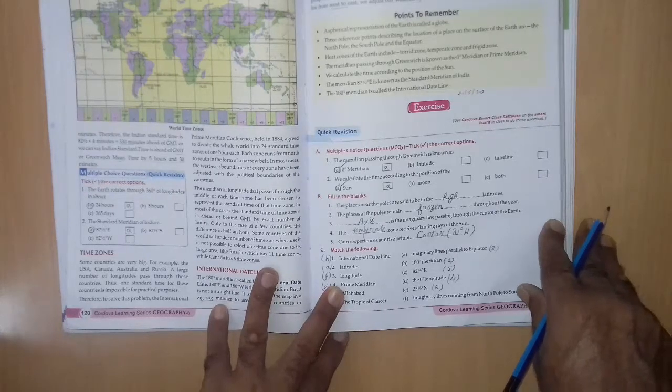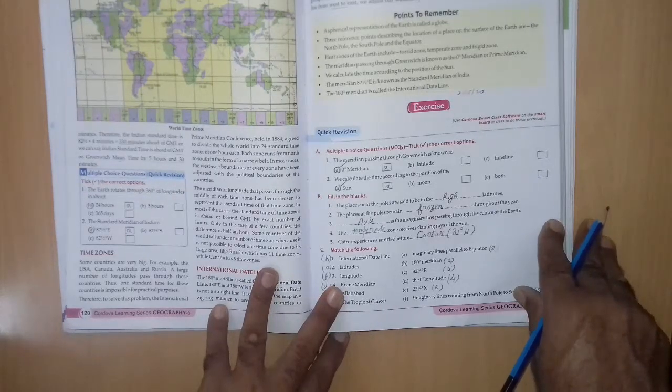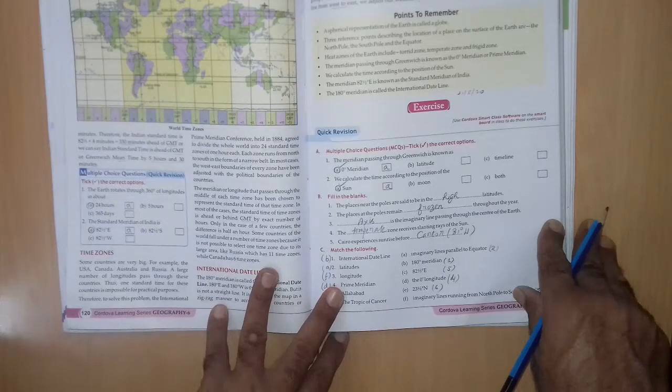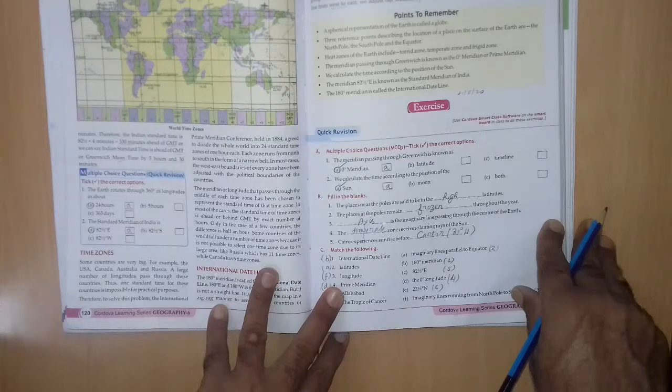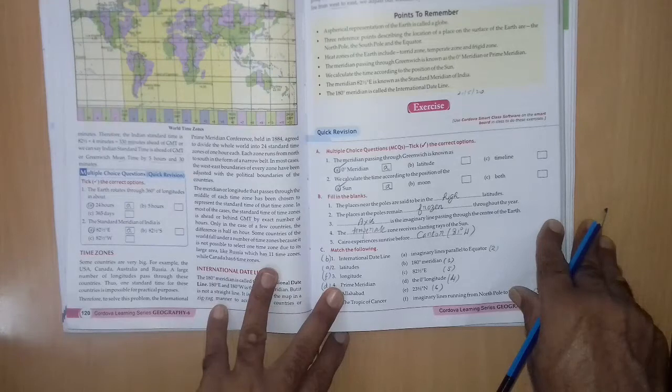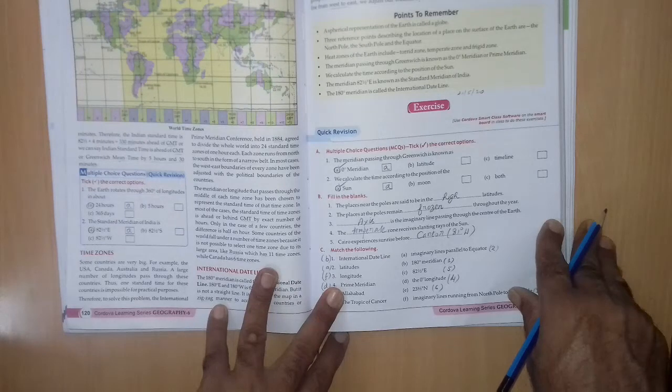B fill in the blanks. The places near the poles are said to be in the dash latitude. 2nd, the places at the poles remain dashed throughout the year. It is frozen.